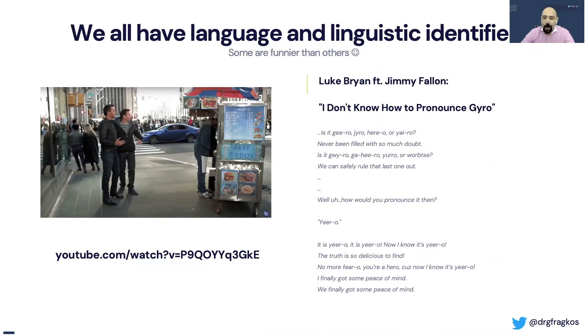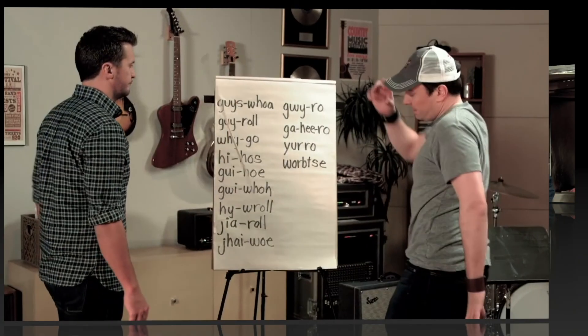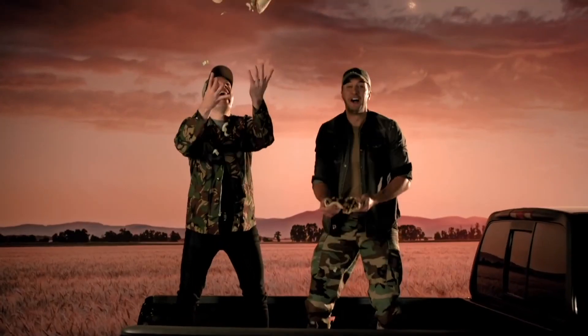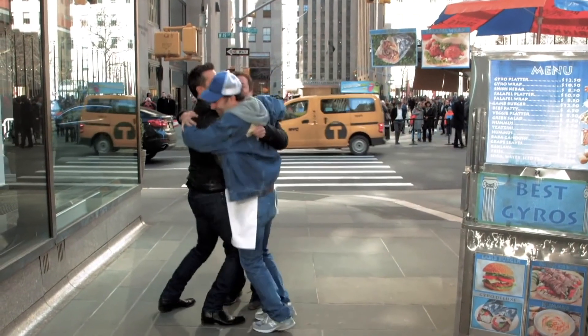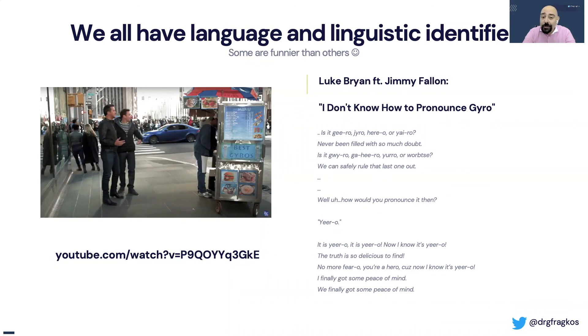Jimmy Fallon and Luke Bryan did a whole sketch about this word, so for you to quickly enjoy. [Video clip plays] 'How would you pronounce it then? Gyro. It is gyro, it is gyro, it is gyro — now I know it's gyro, the truth is so delicious to find. No more gyro, you're a gyro, cause now I know it's gyro.' It is gyro, and it is even more delicious to actually try it.